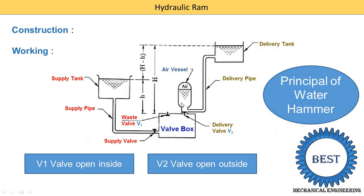In the air vessel, air is already available. So when the water level starts to increase in the air vessel, the air inside begins to compress and its pressure increases. After some time, this compressed air applies pressure on the water level, causing the water to start flowing into the delivery pipe. Through the delivery pipe, water is delivered into the delivery tank. This way the system runs continuously.